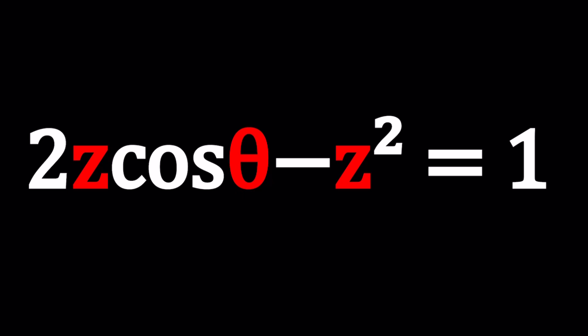We have 2z, or 2, not 2z, cosine θ minus z² equals 1. So are we going to be solving for z? Sure.